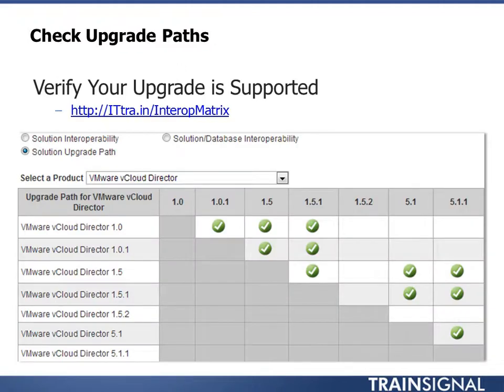The first thing I recommend is checking the upgrade path, because just because you want to go to a particular version of VMware vCloud doesn't mean you can with one upgrade. Always check the compatibility matrix. We're looking at the solution upgrade path from one version to another. There's a shortened URL — the IT train slash interrupt matrix — you can use to get right to VMware's solution upgrade path compatibility matrix, which I'll also show you how to navigate.